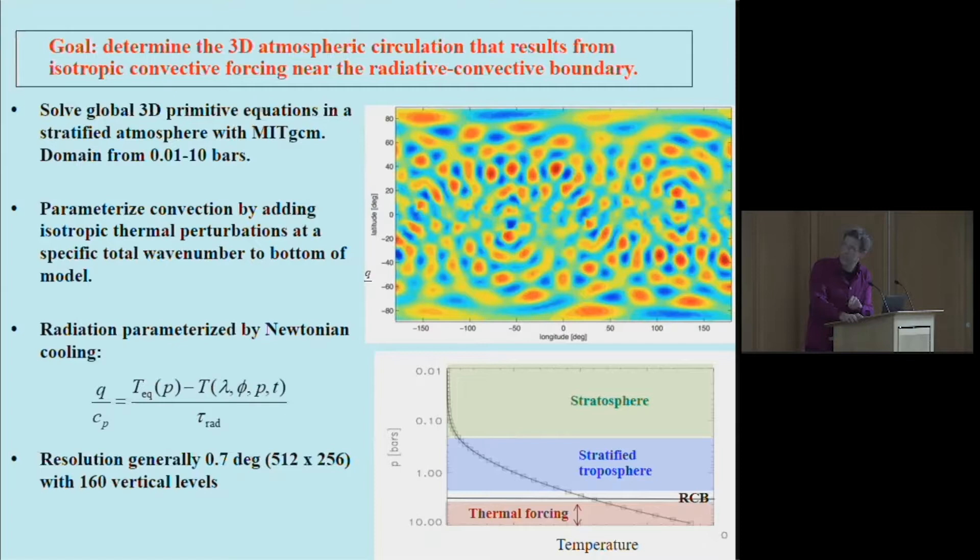These are idealized calculations, so we put in the radiation just by Newtonian cooling, where we damp to some temperature profile like this. Critical is that this is not a function of longitude or latitude; this is only a function of height, which represents the fact that most brown dwarfs do not have a nearby star. The radiative time scale is a free parameter. We have to use high resolution, so we typically use 160 vertical levels, which is necessary to capture the wave behavior.